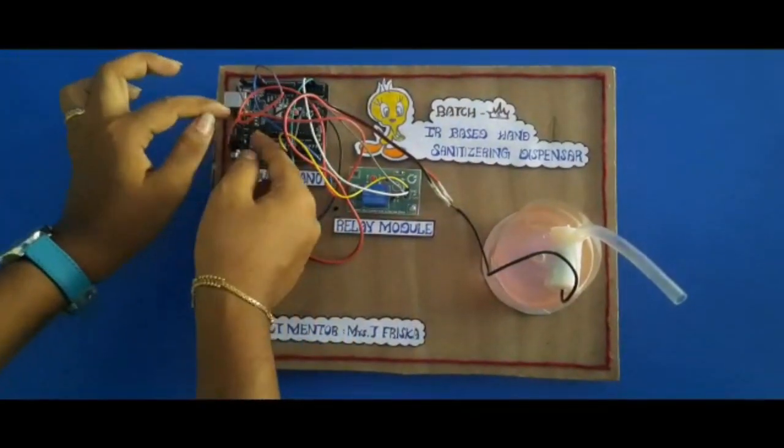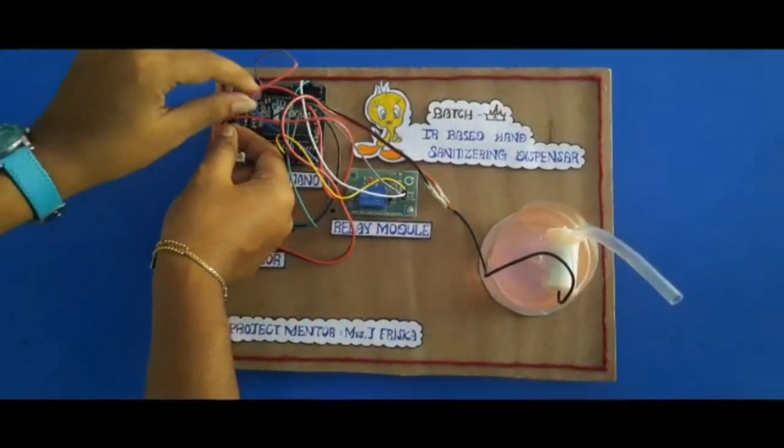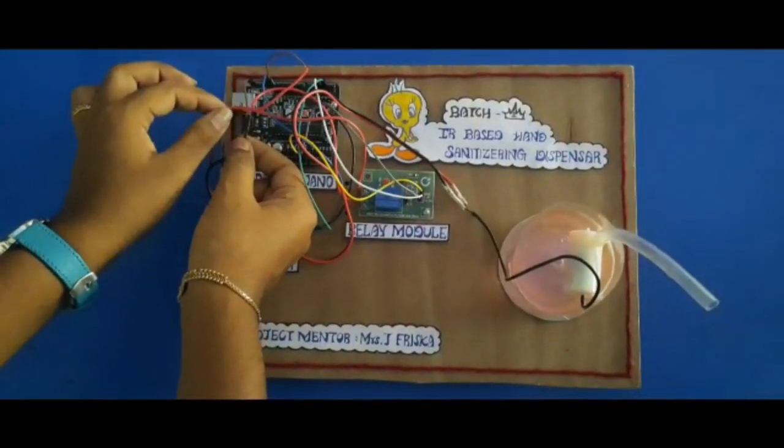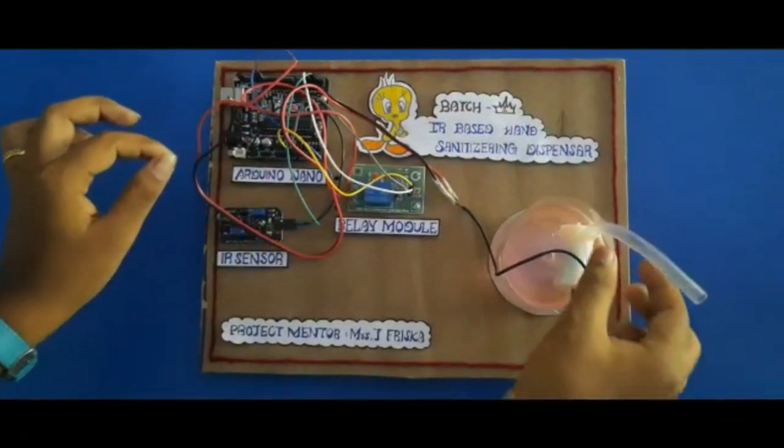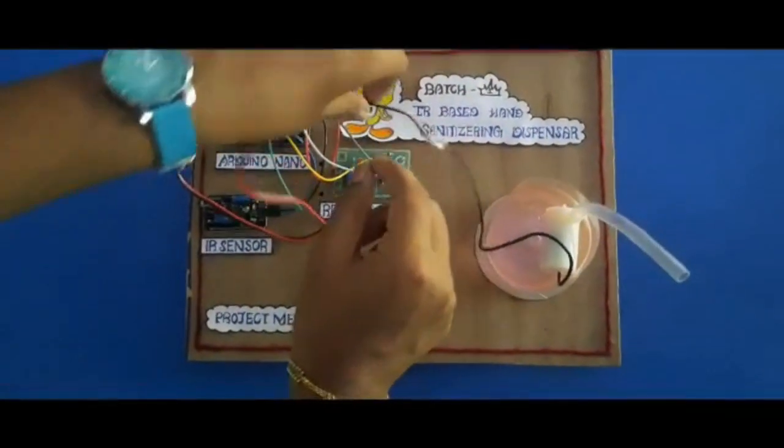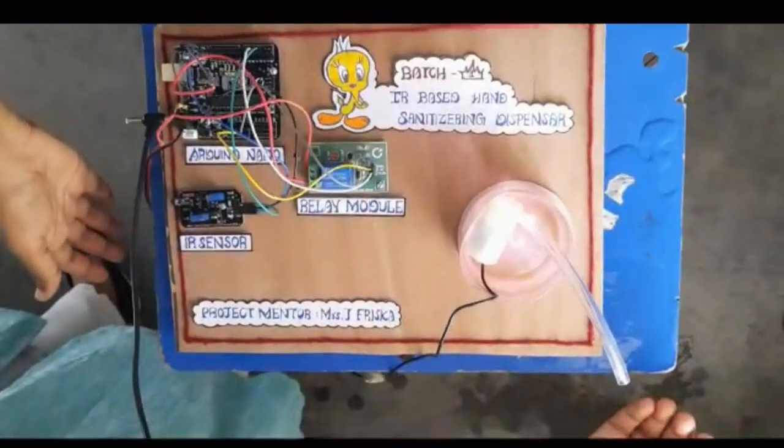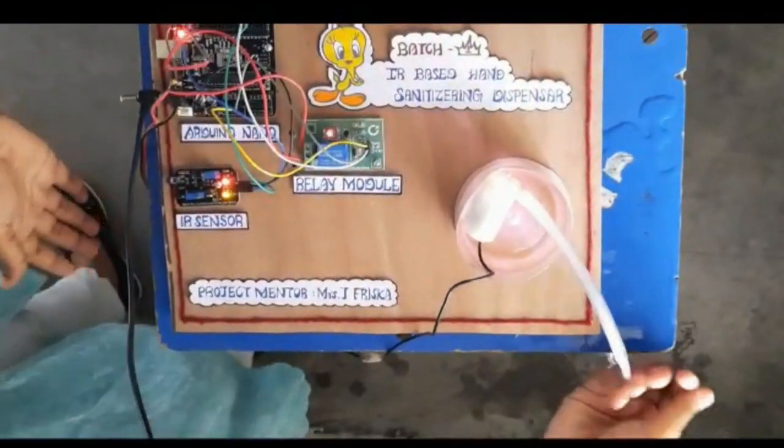When the IR sensor detects a hand, its output goes high. This high output drives the relay driver transistor and energizes relay RL1. The submersible DC pump gets power supply through contacts of the relay. This turns on the DC pump and the hand sanitizer liquid starts to flow out through the small plastic pipe fitted on the bottle.